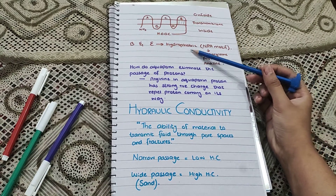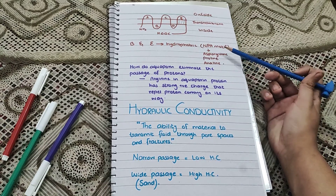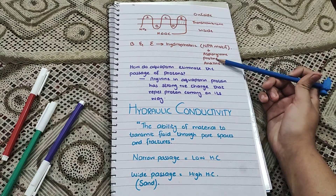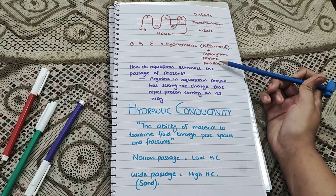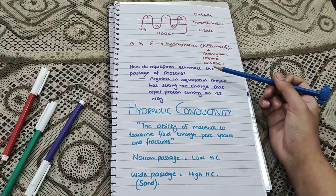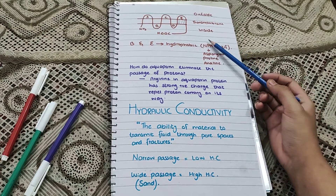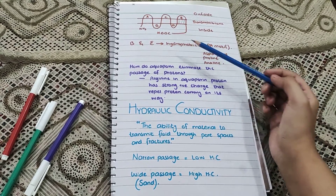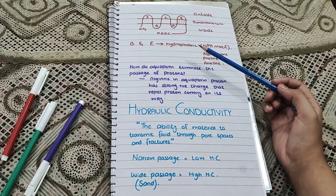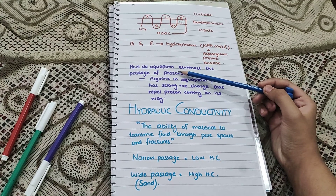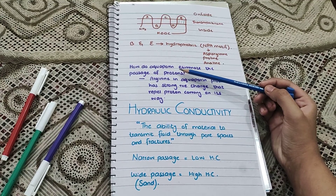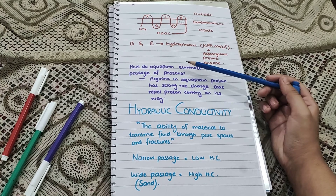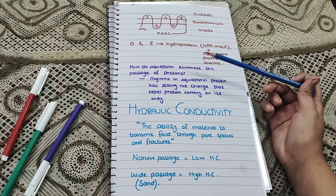The B and E compartments are hydrophobic, which is actually the NPA motif — asparagine, proline, alanine. In upcoming videos I will discuss the NPA motif and this transmembrane protein in detail. But a clear question arises: how does aquaporin eliminate the passage of protons?